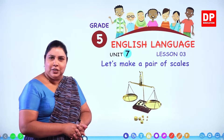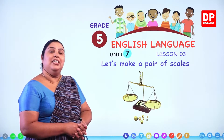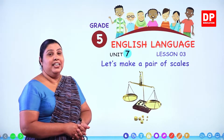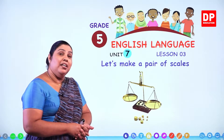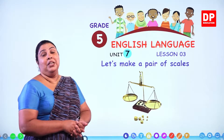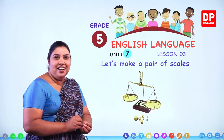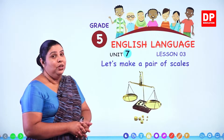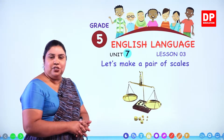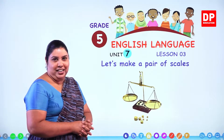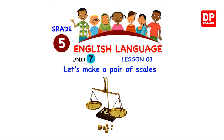Now in our unit number 7 in your pupils book, we are talking about a day at the fair. We are going to learn about a day at the fair — how to deal when we go and buy things from the market or from the fair. So today's lesson is going to be very interesting because we are going to make something. Let's make a pair of scales.